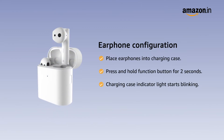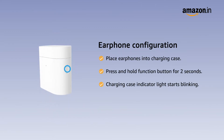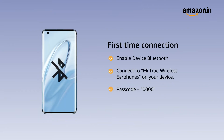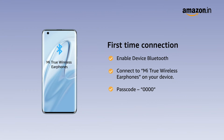Earphone configuration: Place the earphones into the charging case, then press and hold the function button for 2 seconds. The charging case indicator light will start blinking, indicating that the earphones are waiting to be connected. First-time connection: Enable your device's Bluetooth, then locate and connect Mi True Wireless Earphones 2. If a passcode is requested, enter 0000.